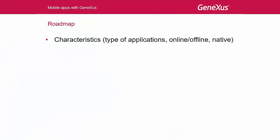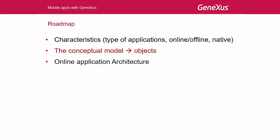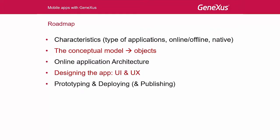The roadmap of these classes is as follows: characteristics of these types of applications, the possibility to have them work online and offline, the need for them to be native, the conceptual model and underlying objects, the architecture of online applications, the app's design including its user interface and user experience, prototyping and deployment methods, and publication in the stores for the various platforms available.